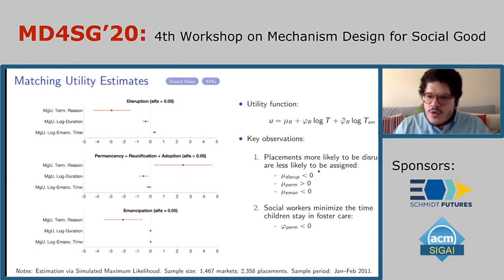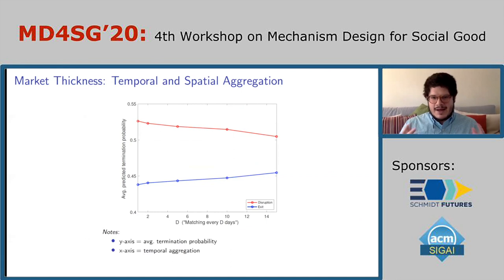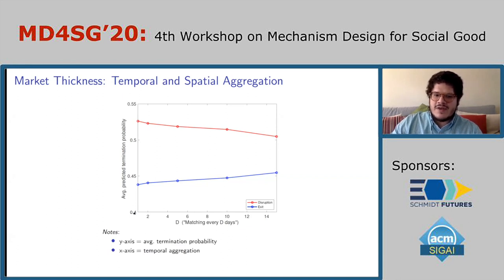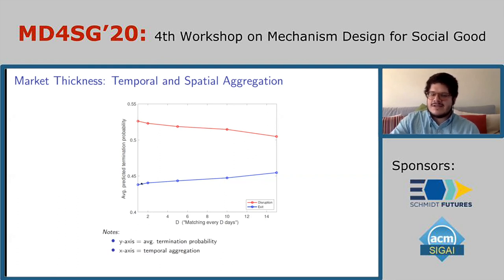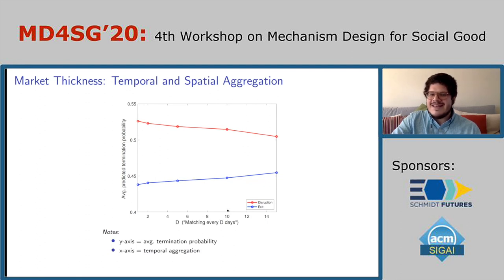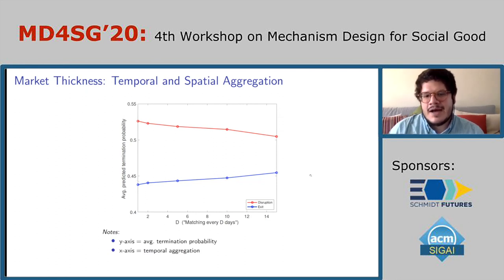These are positive findings — social workers are doing what they say they're doing. Now looking at the counterfactual on market thickness: for temporal aggregation, the data shows D equals one, meaning children are matched every day. If placements were assigned every week or every two weeks, the average probability of disruption would go down and the probability of exiting the system without disruption would go up. However, the lines are essentially flat, so delaying assignments would not be a very good idea.